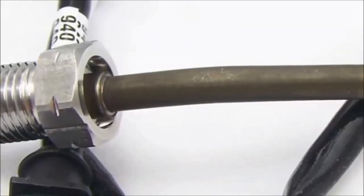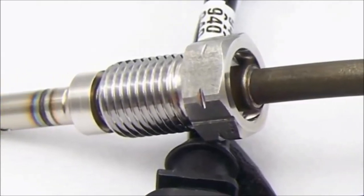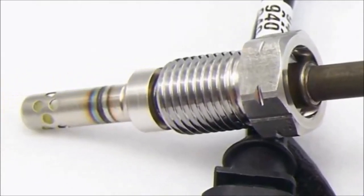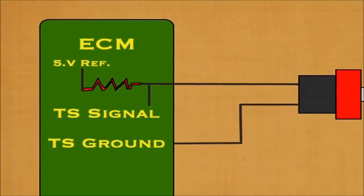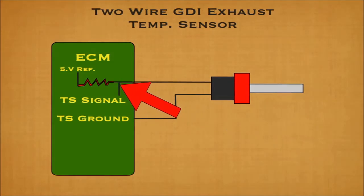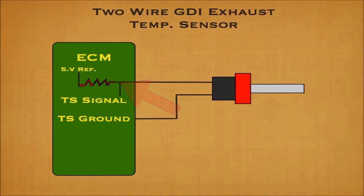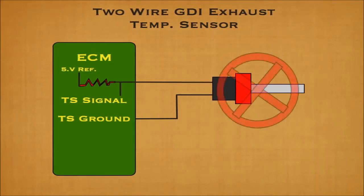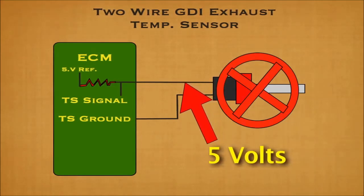GDI exhaust temperature sensor testing: most GDI exhaust temperature sensors have two terminals. It is important to remember that this sensor is connected in series with an ECM internal resistor. The ECM microprocessor takes the actual signal at the middle of the voltage divider network, between the sensor and internal resistor. This is important to know: if the sensor is disconnected and the signal wire is probed, you should see five volts, like any other sensor.